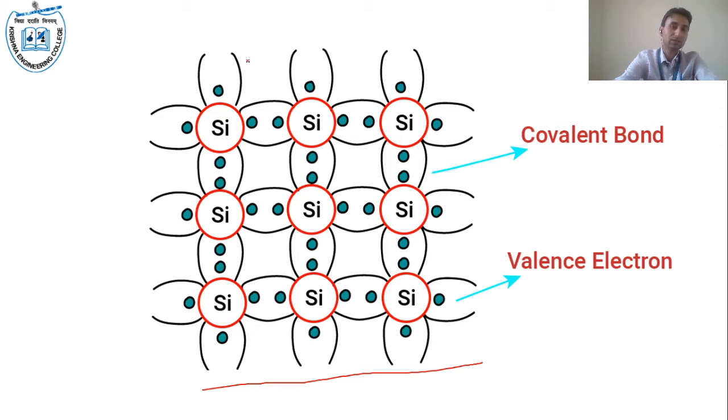If you see this diagram, we will find that there are 9 atoms of silicon, and there is no other atom present. The outermost orbit shell electrons are shown this way. These are all outermost orbit electrons, that is called valence electrons. And the sharing between both atoms is called covalent bonding.